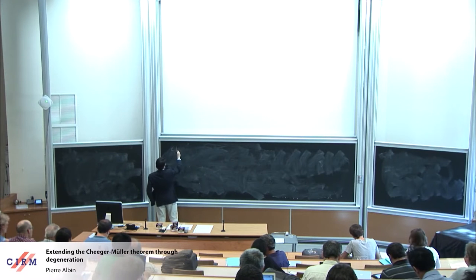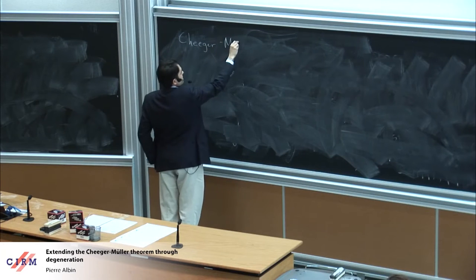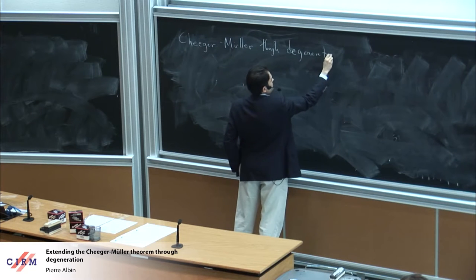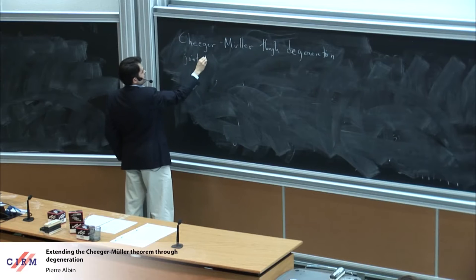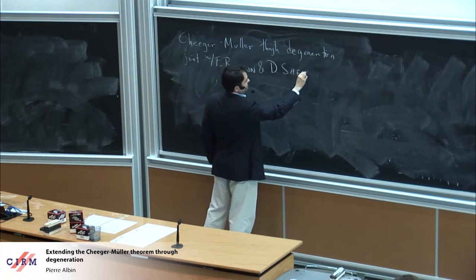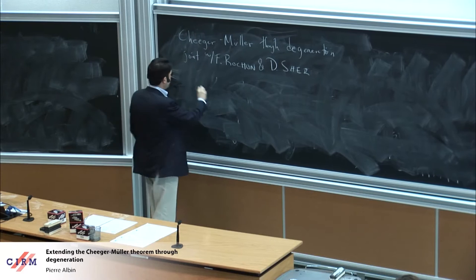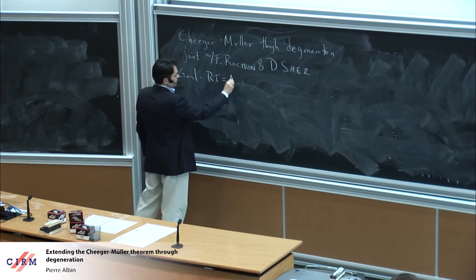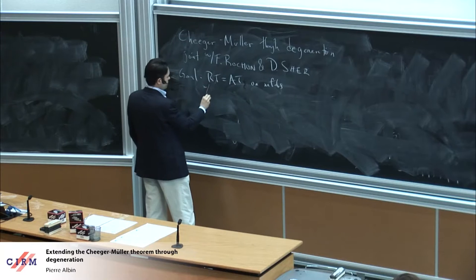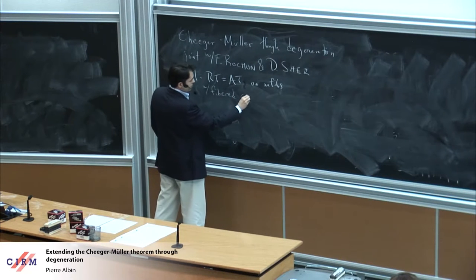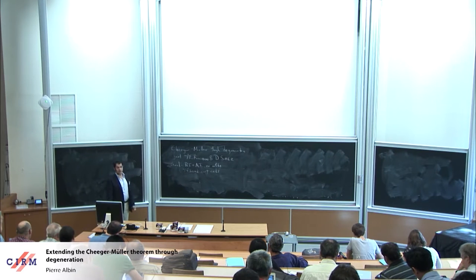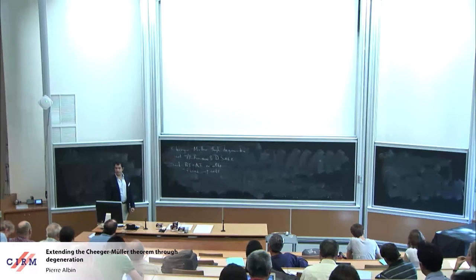I'll be talking about the Cheeger-Müller theorem through the generation. This is reporting on joint work with Frederic Rochon and David Sher. The goal is to show that Reidemeister torsion is equal to analytic torsion on manifolds with fibered cusp ends. I'll start the talk by reminding you what all of the terms in the goal mean, and then I'll tell you what we did and how we did it.